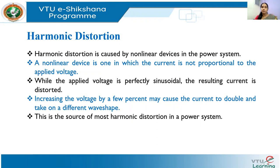The applied voltage may be perfectly sinusoidal, but the resulting current from a non-linear load will be distorted. In basic electrical engineering, applying a sinusoidal voltage to a resistive load gives in-phase current; to an inductive load the current lags; to a capacitive load the current leads. These are all linear loads where current is proportional to voltage, so the resulting current remains sinusoidal.